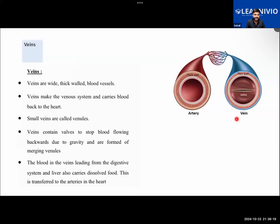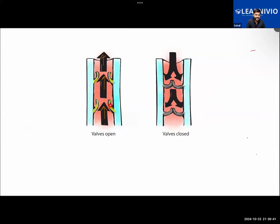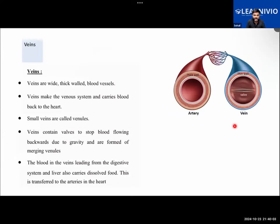In the veins, deoxygenated blood will be flowing - the blood which contains carbon dioxide and waste material. Since it is not flowing at high pressure, it can flow in the opposite direction also, because there is no pumping organ pushing blood into the vein. To prevent the backflow, there are special structures inside the vein called valves. While blood flows forward the valves are open, and if backflow occurs, the valve closes itself. In the arteries, valves are not present, because the blood is already flowing at high pressure.